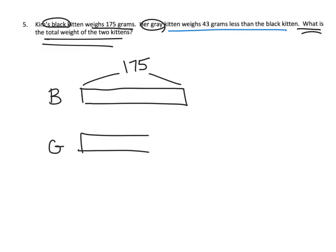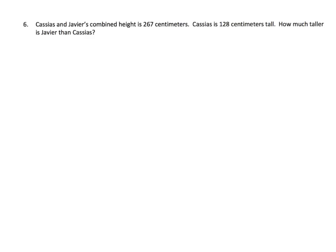I'll erase some of the gray tape to show it's shorter. That gap represents 43 grams. The total weight of both kittens is what we're looking for, so I'll use the letter T for total. This is a classic tape diagram. It's going to involve a little subtraction to find the gray kitten's weight, and then a little addition to find the total.